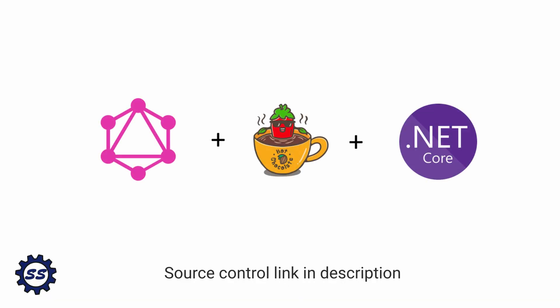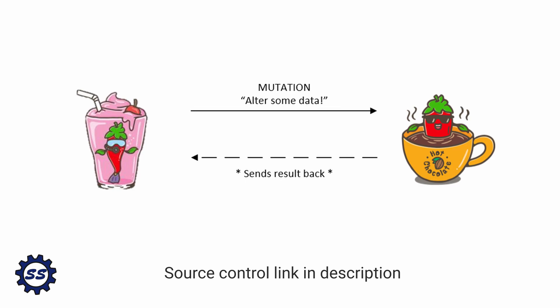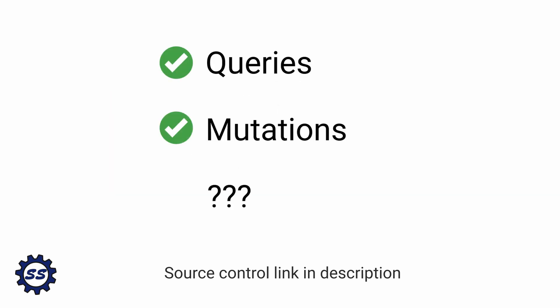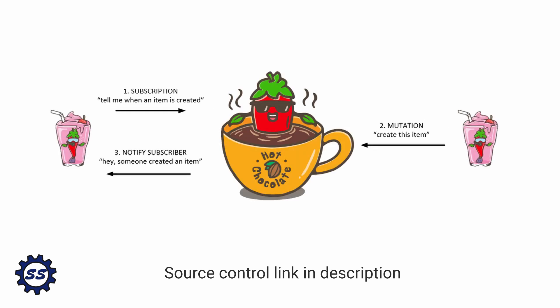So far in our GraphQL server with Hot Chocolate, we've added queries for getting data and mutations for creating, updating, and deleting data. Those are two of the three main operations with GraphQL, but the last operation we want to look at is subscriptions. Subscriptions allow clients to subscribe to some kind of event on our API and receive notifications whenever that event occurs.